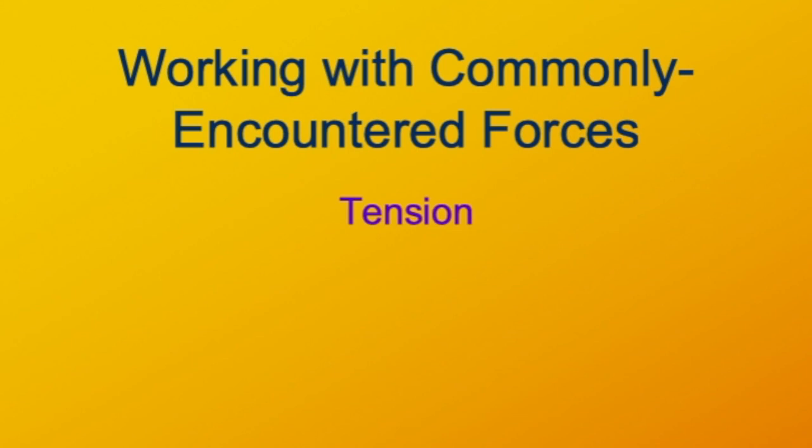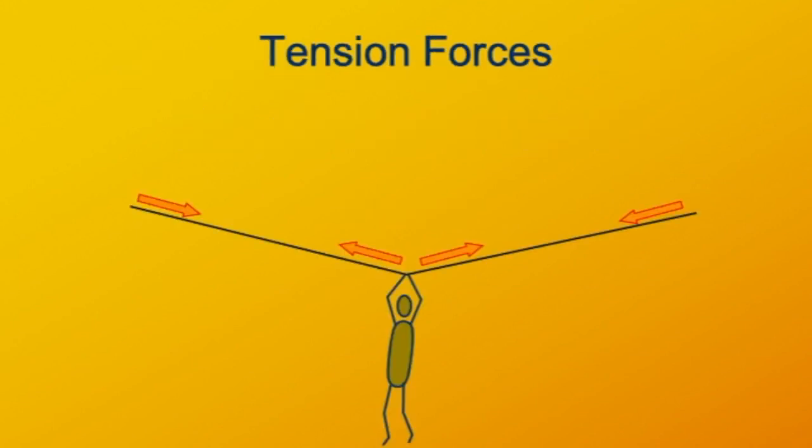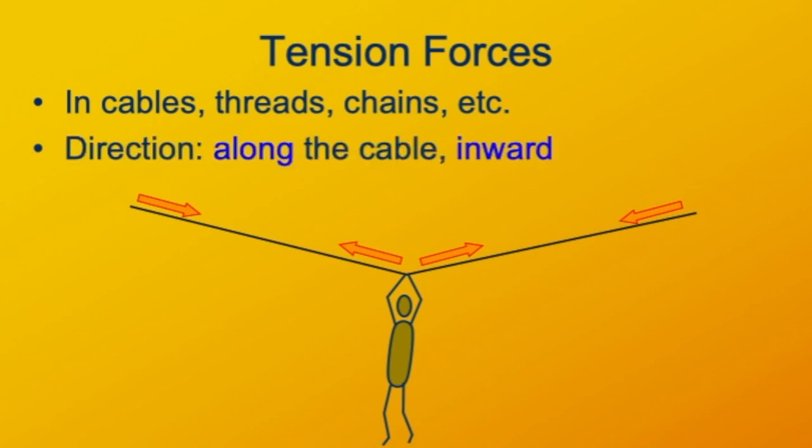Tension here is exerted by the two cables that are holding the hammock up from both sides. Tension is a force exerted by things like cables, strings, chains, and ropes. We model the direction of tension as always being in exactly the same direction as the cable itself and always inward. So the cable is always pulling. You can't push a string.